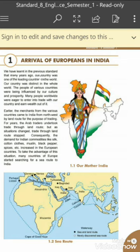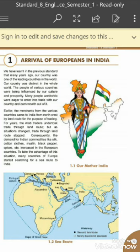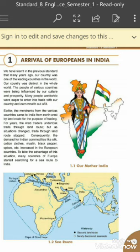Earlier, merchants from various countries came to India from the northwest by land route for the purpose of trading. The Arab traders undertook trade through the land route for years. But as the situation changed, trade through the land route was stopped due to problematic situations, and unfortunately the Arab traders could not continue their trade.